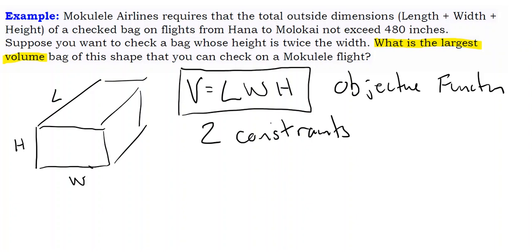So going back to the problem, we have to read it carefully to determine what we could use for constraints. And the first constraint would be that the length plus the width plus the height of the checked bag cannot exceed. And again, for this sake of this problem, we're not going to use an inequality. We're just going to say it's going to be equal to 480. So that is one constraint. So the length plus the width plus the height is equal to 480. And we still need one more constraint.